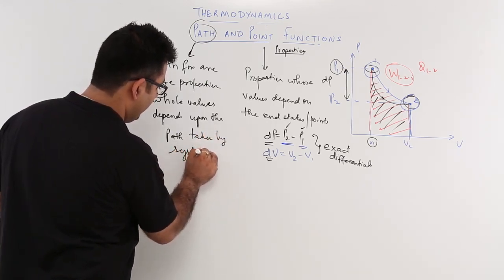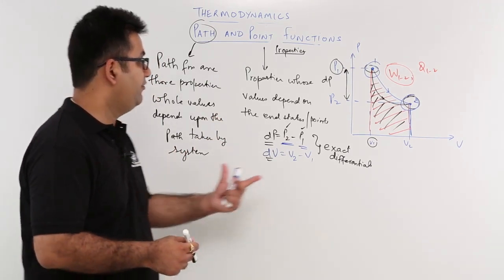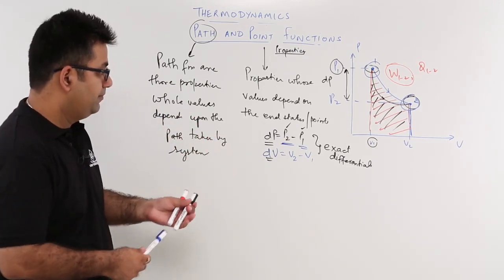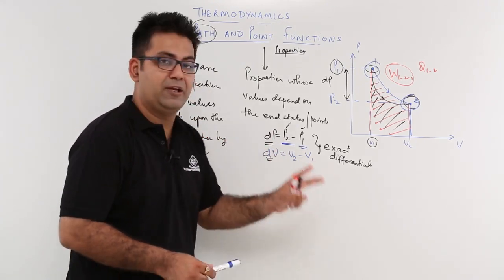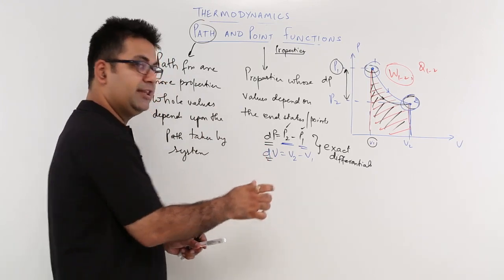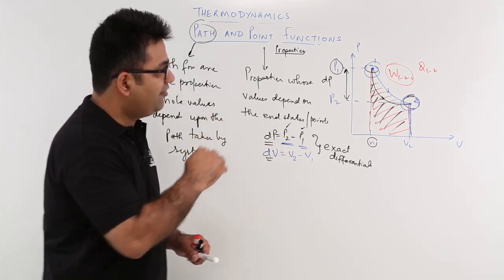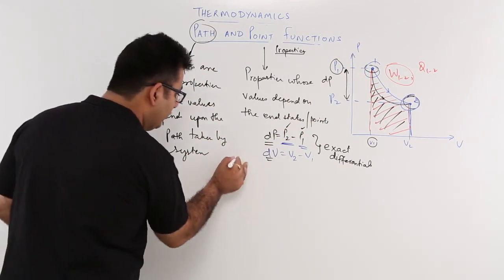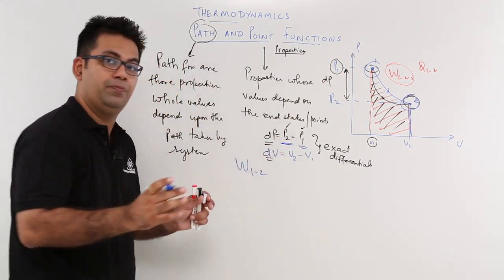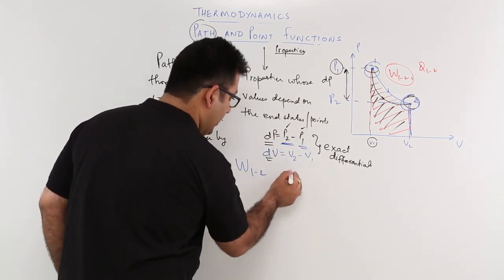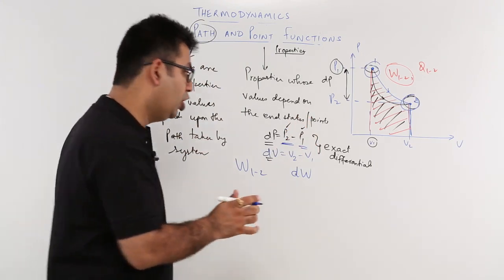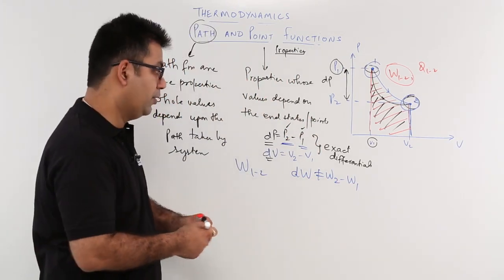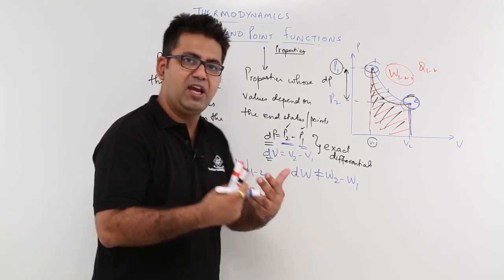There is an important difference between a point function and a path function. dp equals P2 minus P1: the final value minus the initial value gives you the change in the point function. But if I have to find out the net work done in going from state 1 to state 2, I write it as W12. Now dW does not mean W2 minus W1 — it is not equal to W2 minus W1 — because we cannot find out the value of W at state 2.